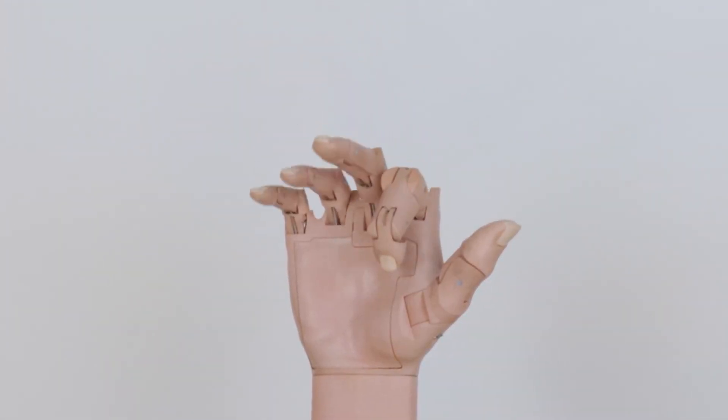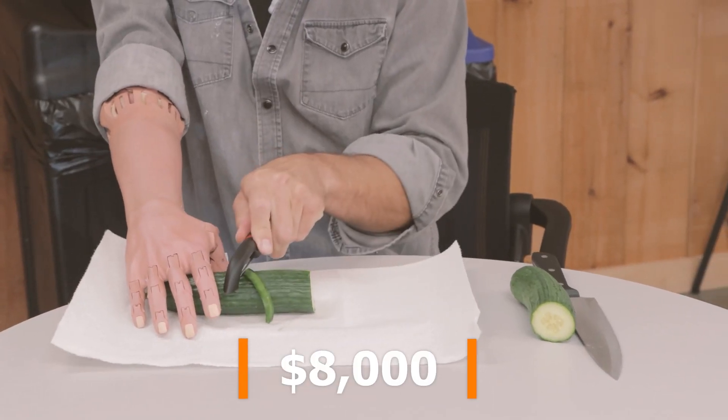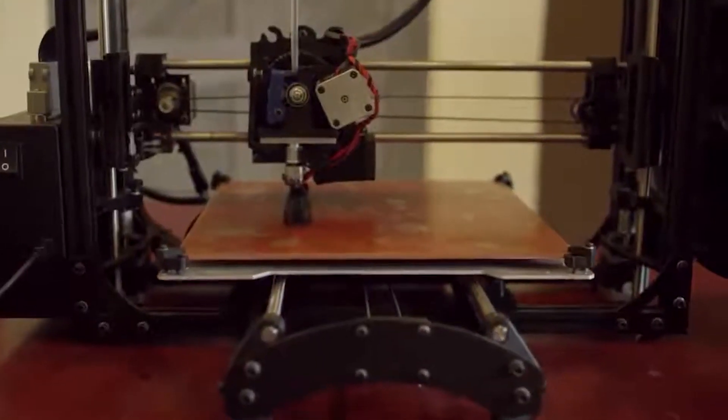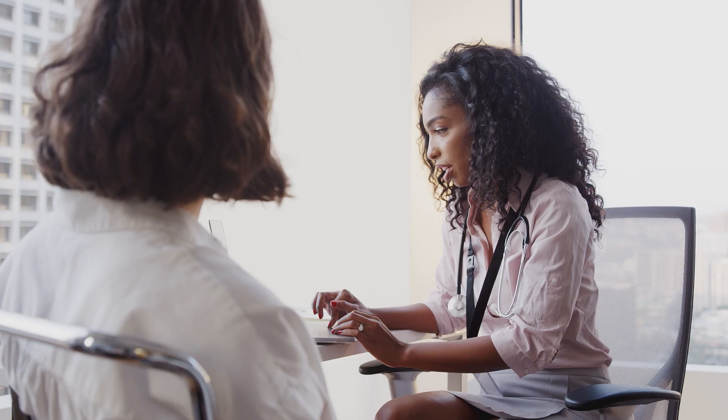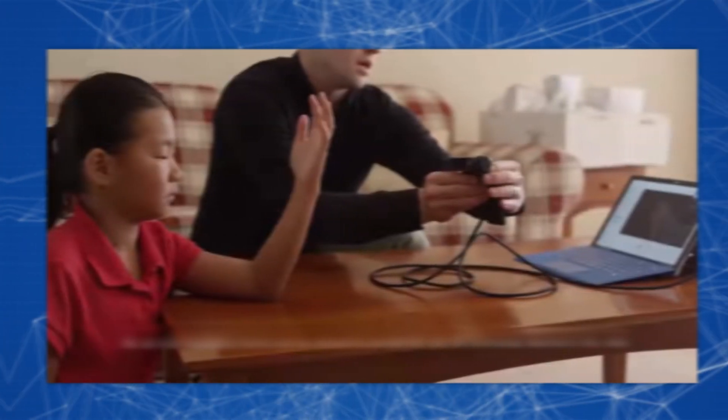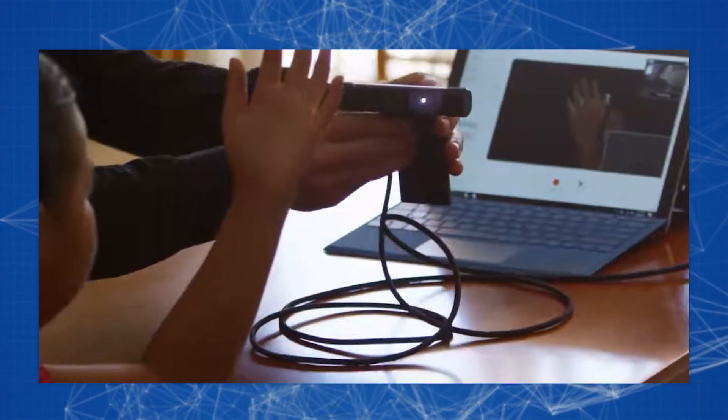The founder of Unlimited Tomorrow managed to reduce the cost of a bionic arm by almost 10 times, up to $8,000, by using 3D scanning of the stump and 3D printing of personalized prostheses. If earlier a person with an amputated limb had to personally and repeatedly go to the prosthetist's office for fittings and consultations, then LaChapelle suggested entrusting the measurements and fitting of prostheses to the patients themselves.